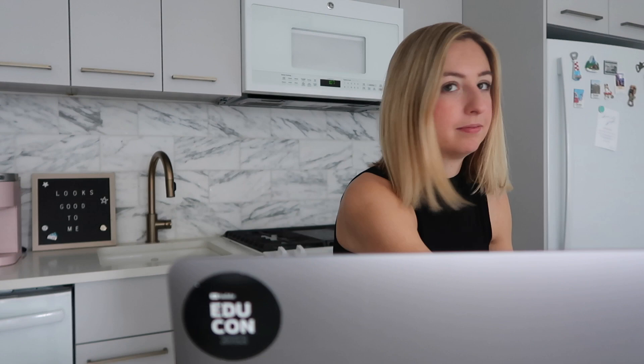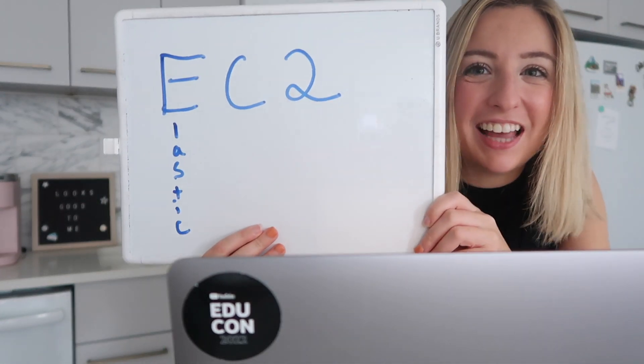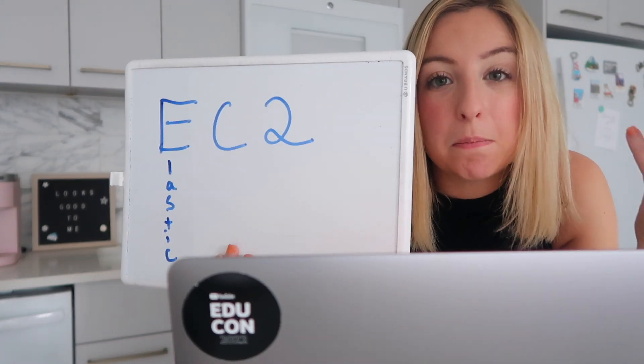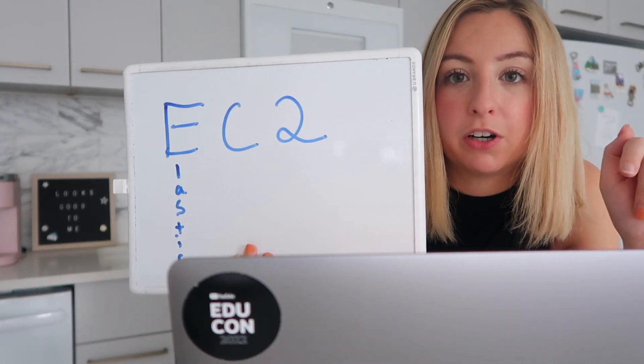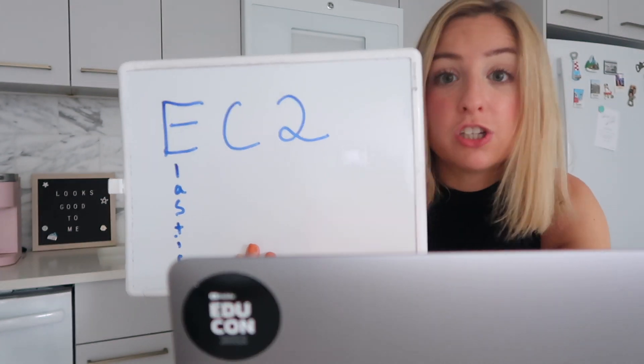Let's break down the acronym. EC2, where the E stands for Elastic. Elastic means it's not permanent. You can request to rent more computers as you need them or just use one for your application. You can also configure your machine to exactly the right specs you need for your use case. This makes the machine elastic, flexible. You don't have to go to Best Buy to buy a machine and then get stuck with the initial specs you picked forever.